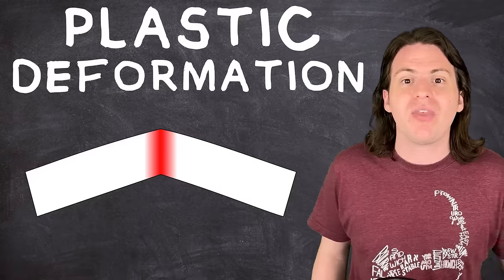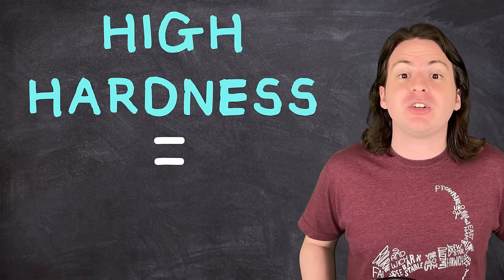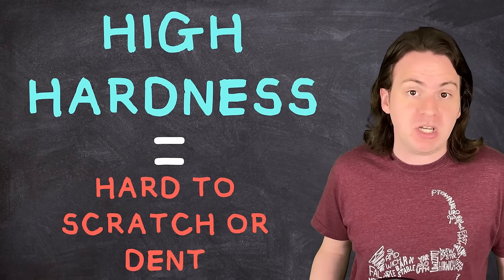Plastic deformation is when you deform something and it's not able to snap back. It's permanently deformed. So, a material with a high hardness is more resistant to being plastically deformed.